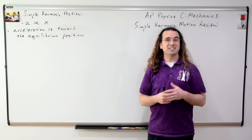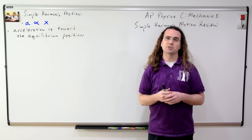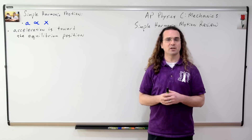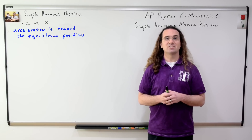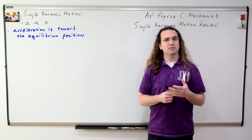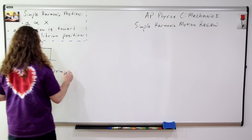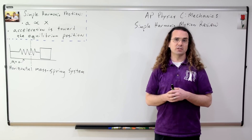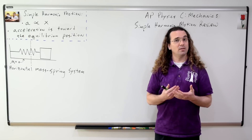An object is in simple harmonic motion if the acceleration of the object is proportional to the displacement of the object from equilibrium position, and if the acceleration of the object is directed toward the equilibrium position. For example, a horizontal mass-spring system on a frictionless surface has a free body diagram which looks like this.